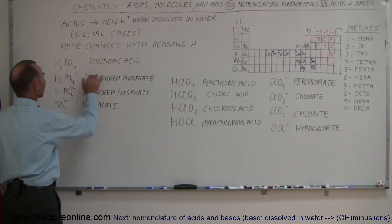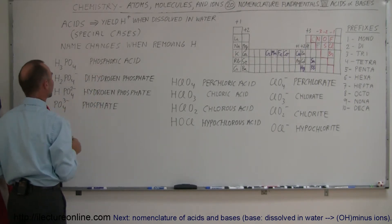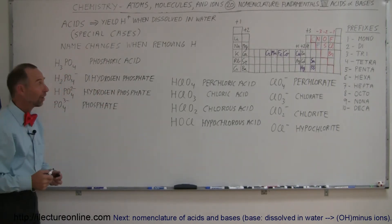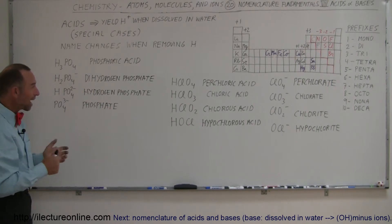And then here notice that we started with an acid. Once we start removing hydrogens from it, it no longer was called the acid, was called the hydrogen phosphate, hydrogen phosphate, and phosphate ion. So that's another set of rules for you to hang on to.